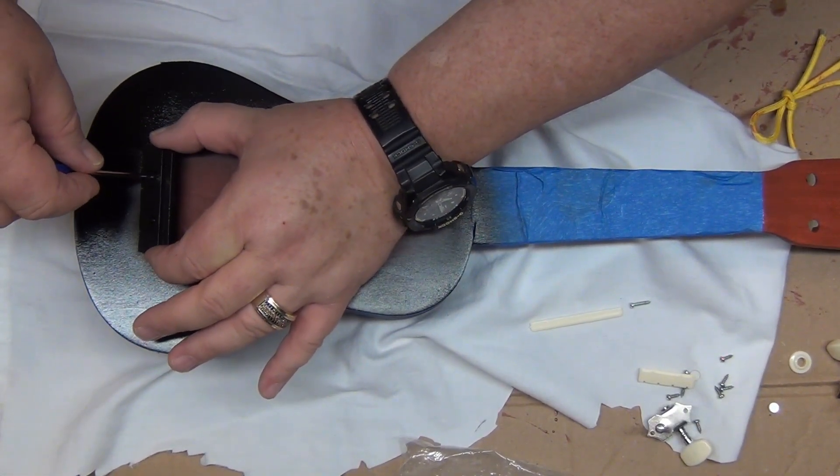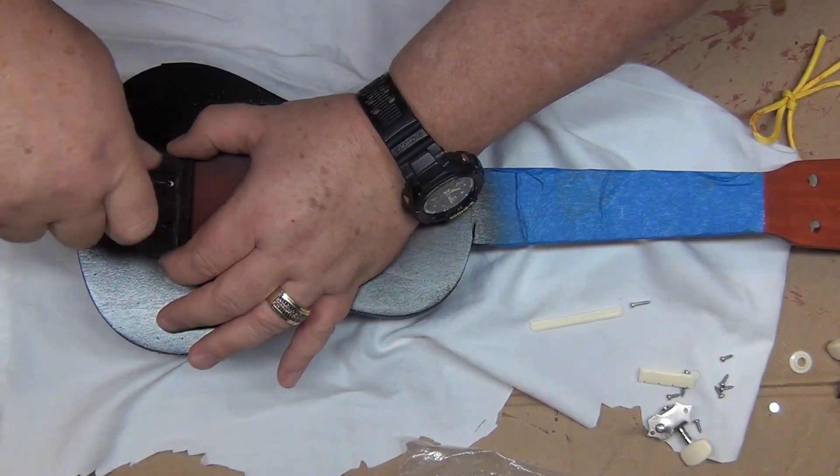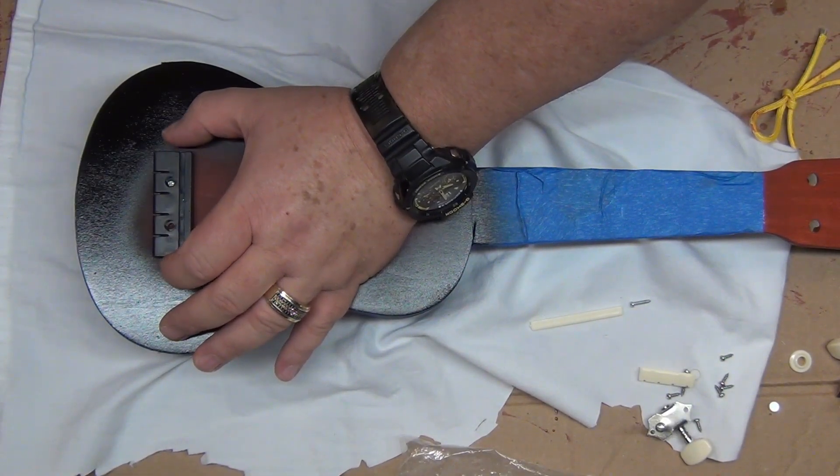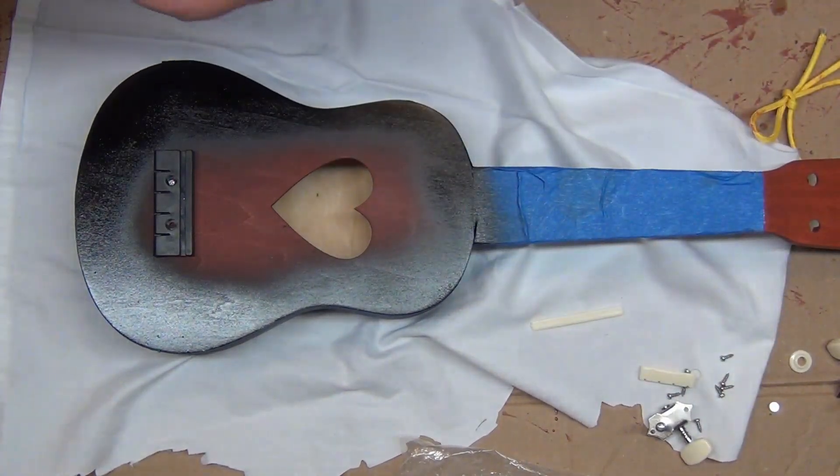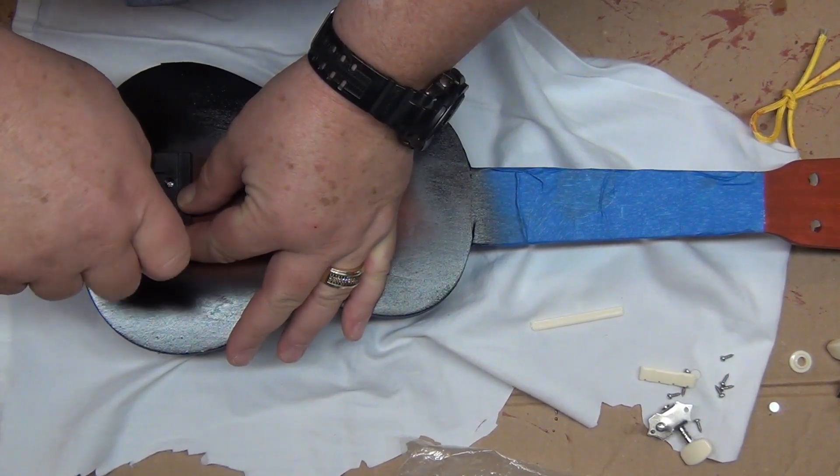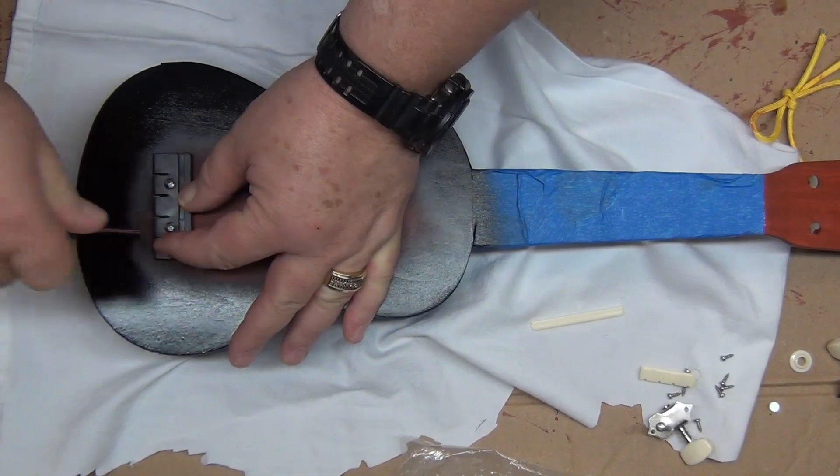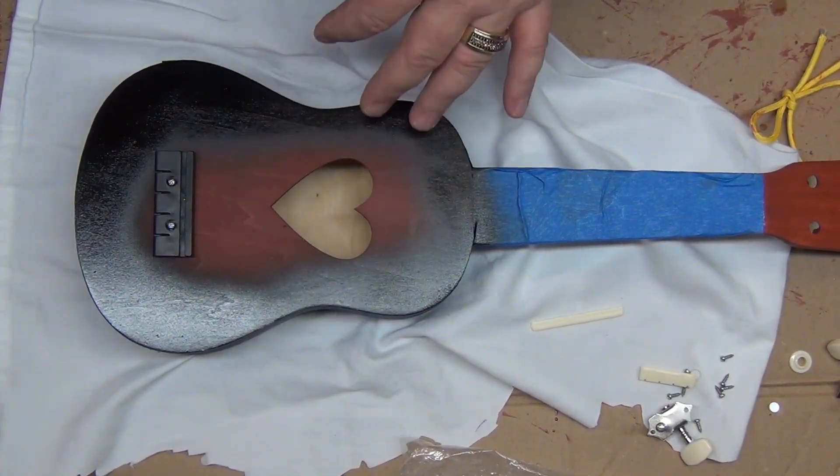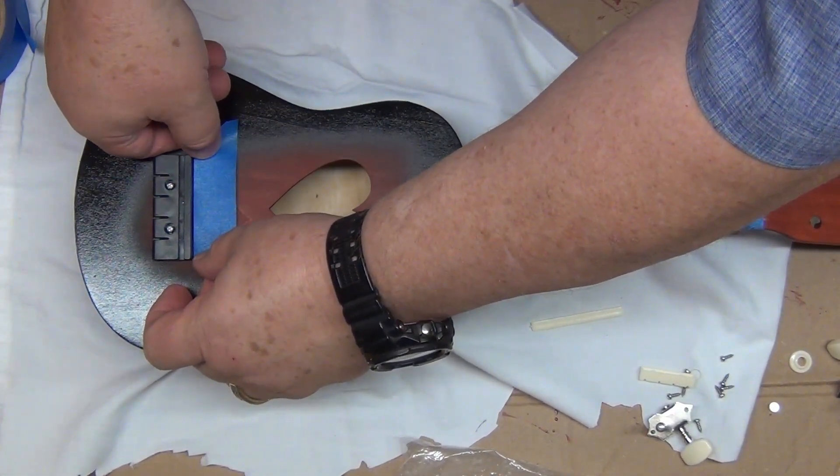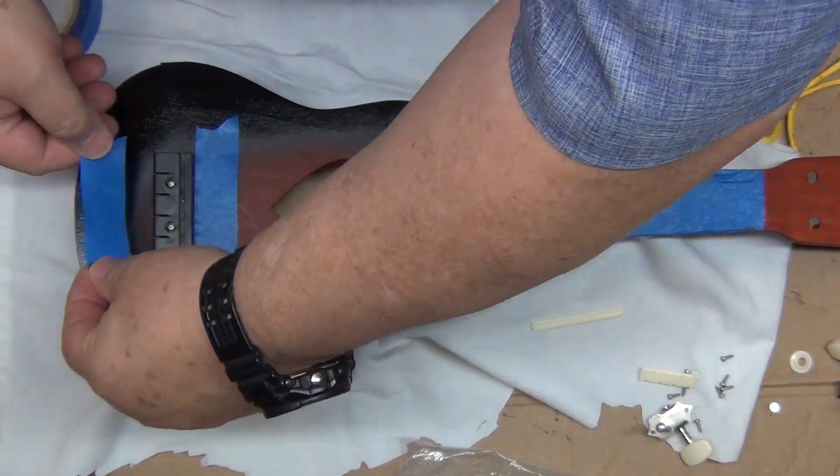Before I glue the bridge down, I wanted to make sure I knew exactly where I could apply glue. So I started by making a temporary installation of the bridge, then I applied tape around the bridge so that anything underneath the bridge will show is where I can apply glue.